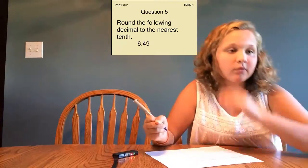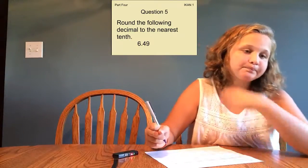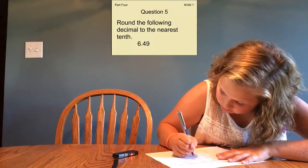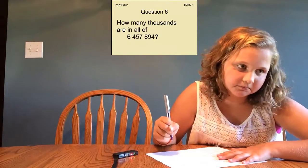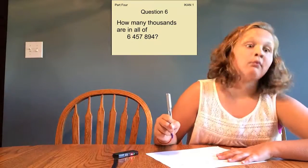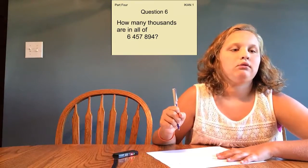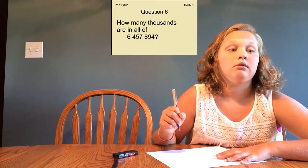Round the following decimal to the nearest tenth: 6.49. How many thousands are in all of the number 6,457,894?